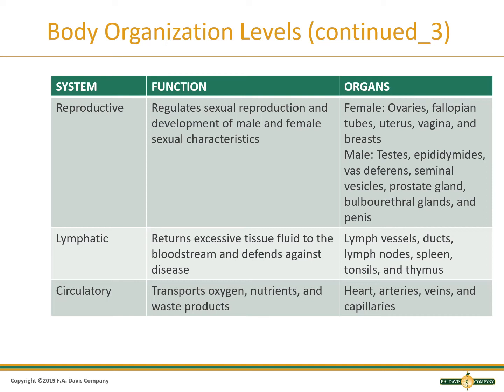The lymphatic system's organs include lymph vessels, ducts, lymph nodes, spleen, tonsils, and thymus. The circulatory system functions to transport oxygen, nutrients, and waste products. Its organs include the heart, arteries, veins, and capillaries.